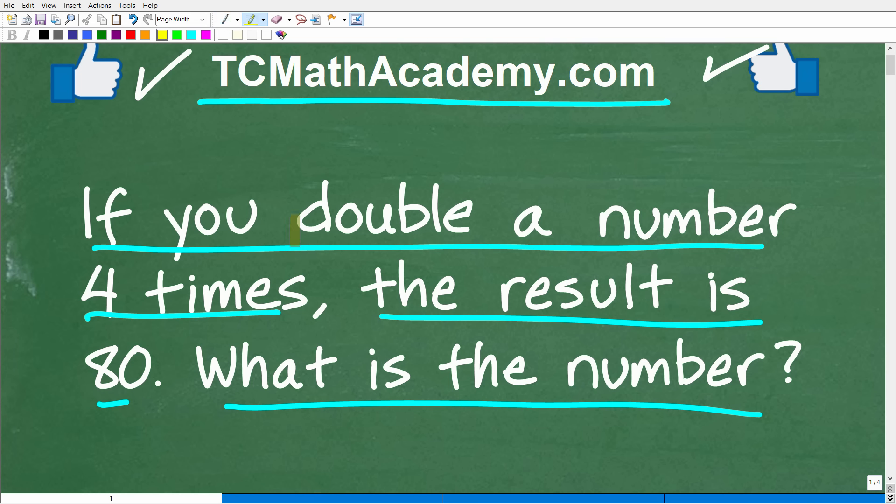And one more time, the problem is, if you double a number four times, the result is 80. What is this number? Well, let's go ahead and take a look at the answer.